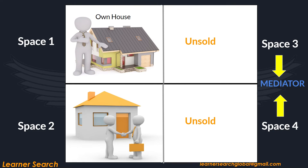Let's assume you have a one-acre piece of land partitioned into four parts. The first part contains your own house, which is not a revenue source. In space 2, you rent a building to someone and earn money from it. The third and fourth spaces remain unsold, so you find a mediator and engage his assistants in selling them. You will start earning more money after these are sold as well.